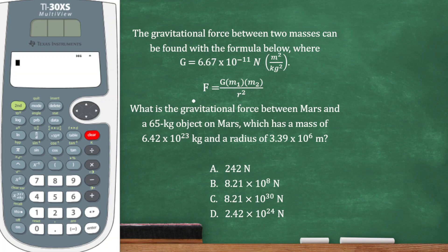The gravitational force between two masses can be found with the formula below, where G equals 6.67 times 10 to the negative 11th Newtons times meters squared over kilograms squared. What is the gravitational force between Mars and a 65-kilogram object on Mars, which has a mass of 6.42 times 10 to the 23rd kilograms and a radius of 3.39 times 10 to the 6th meters?